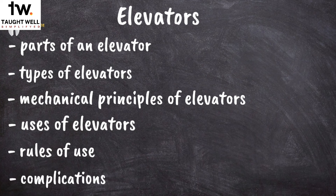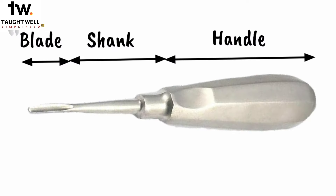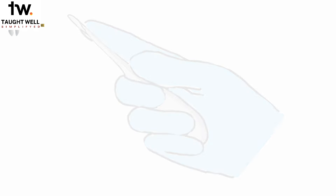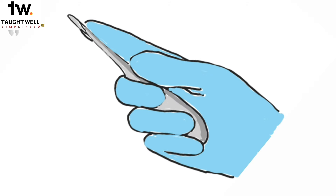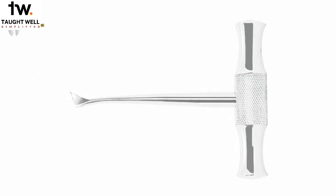Now let's look at the parts of an elevator. There are three parts of an elevator: the blade, the handle, and the part that connects these two, which is the shank of the elevator. Have you ever wondered why this handle is so bulky? The reason is that it allows us to hold the elevator comfortably so that we get more control over the instrument, because applying controlled force is very important while using elevators.